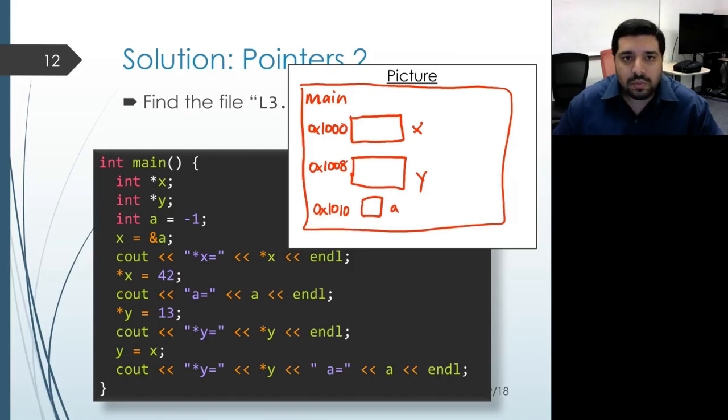That remains the case when the actual declarations for X and Y get executed because they don't perform any explicit initialization. So in most implementations, whatever value happened to be located in memory for where X and Y are placed, those values remain there. So there's some undefined values contained inside of X and Y. When the program reaches the initialization for A, then it does get initialized to the well-defined value of minus one.